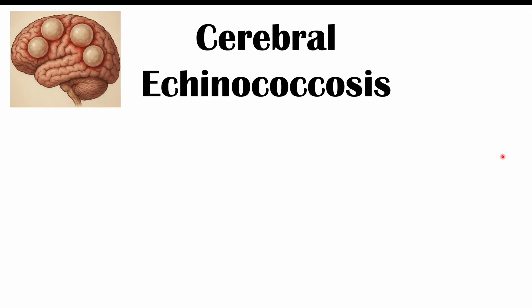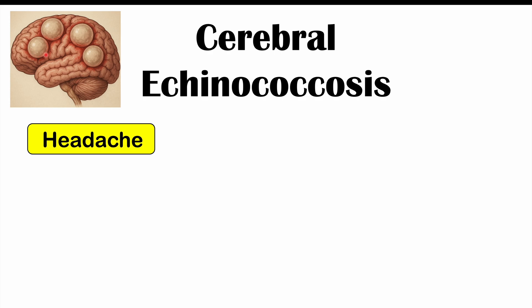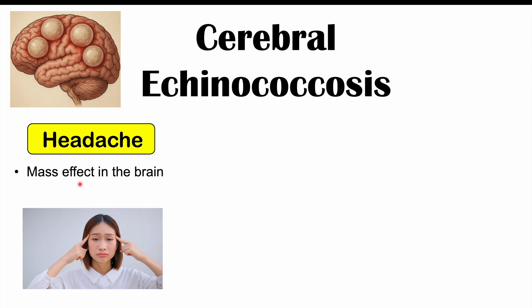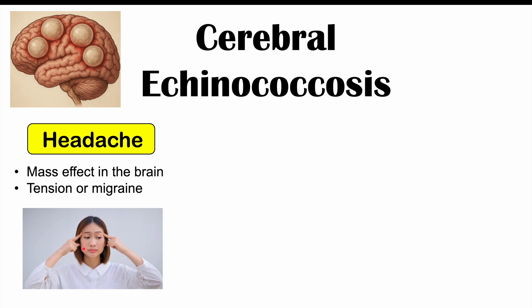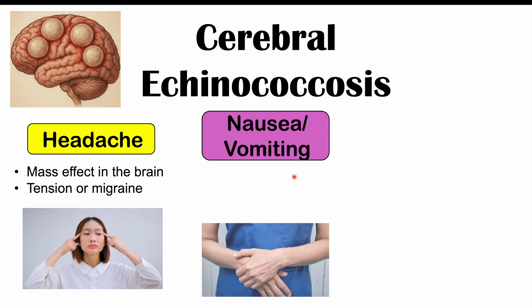The brain can also be involved in echinococcosis — called cerebral echinococcosis or cerebral cystic echinococcosis. This is the most rare form, occurring in less than 2% of patients. Cysts can grow and enlarge in the brain, acting like a brain mass or tumor, leading to increased intracranial pressure, or ICP. Increased ICP leads to mass effects including headache — which can be a tension headache or a unilateral, pounding migraine — and nausea and vomiting.